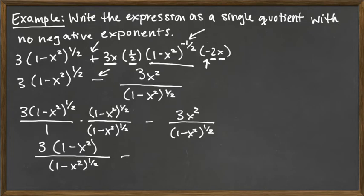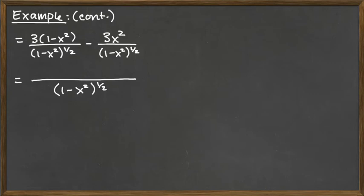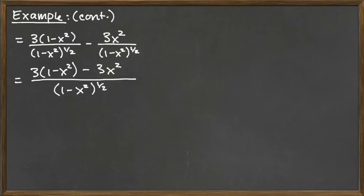We then subtract 3x squared over 1 minus x squared raised to the 1 half power. Now we're ready to subtract because we have the same denominator. Copying over what we wrote, we subtract the fractions: the common denominator stays, and we subtract the numerators, giving us 3 times 1 minus x squared minus 3x squared on top. It's a single quotient with all positive exponents, but we could make the top look a little nicer.